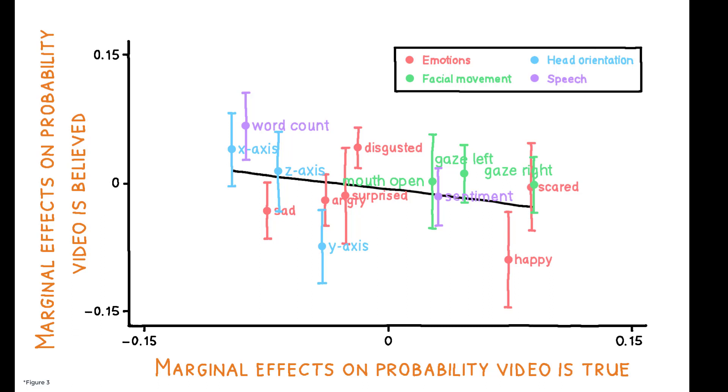For example, receivers were less likely to believe videos in which senders said fewer words or appeared happier, but such videos were actually more likely to be true.